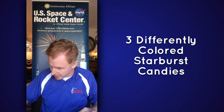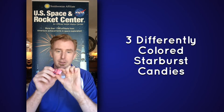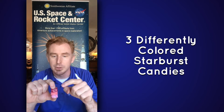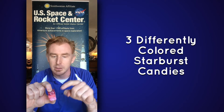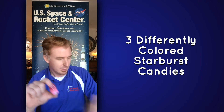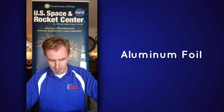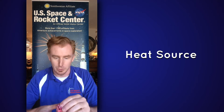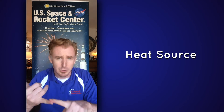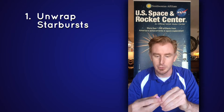To do this, you're going to need three Starburst candies, one of each color — I have a dark red, a medium pink, and a light pink — plus a piece of aluminum foil and a heat source. You can use an iron, or what I'm going to use: a kitchen panini press, which works really well. If you don't have one, an iron works just as easily. The first thing you need to do is open up each of your Starbursts.